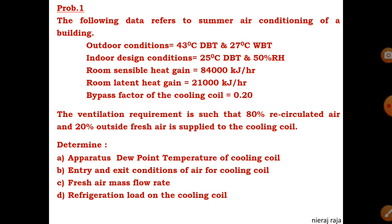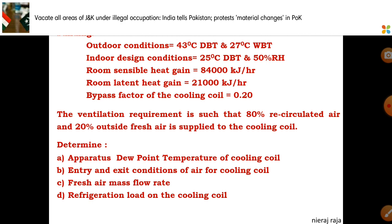The ventilation requirement is such that 80% recirculated air and 20% outside fresh air is supplied to the cooling coil in order to get the required indoor condition. Out of the total air supplied to the cooling plant or cooling coil, 20% should be outside ambient air at 43°C DBT and 27°C WBT, and 80% should be recirculated air coming from that particular room.